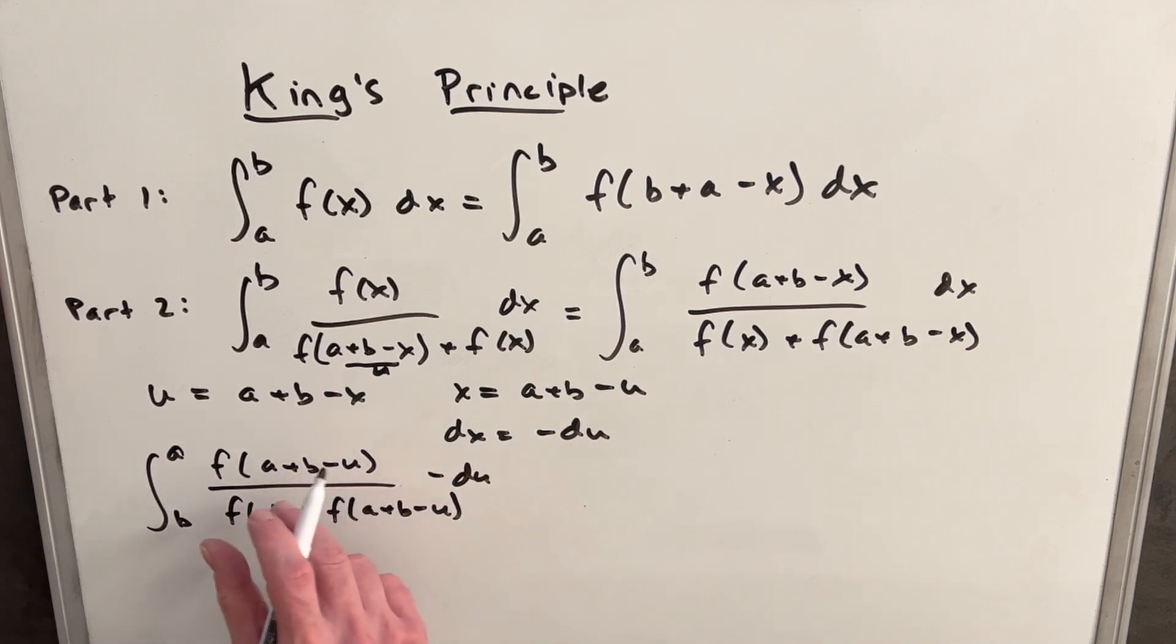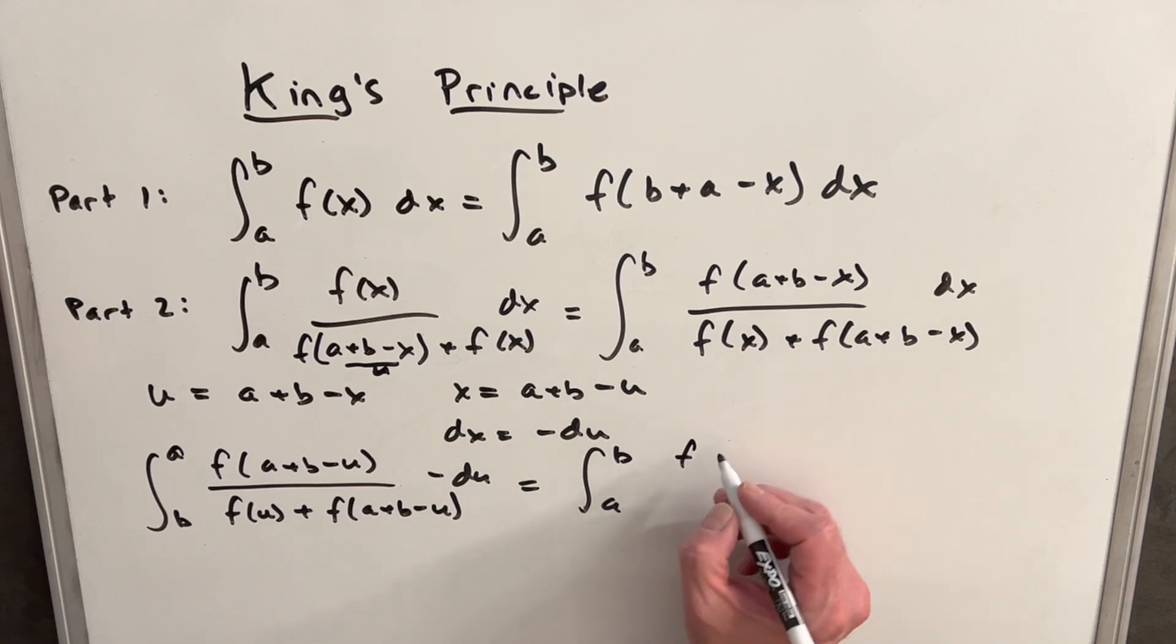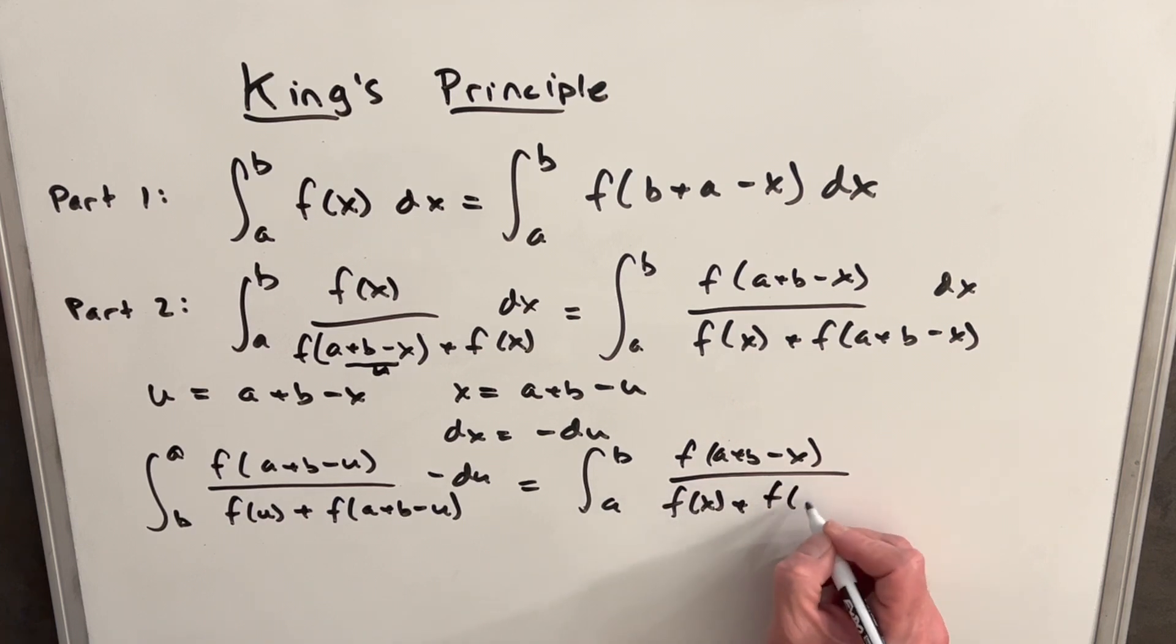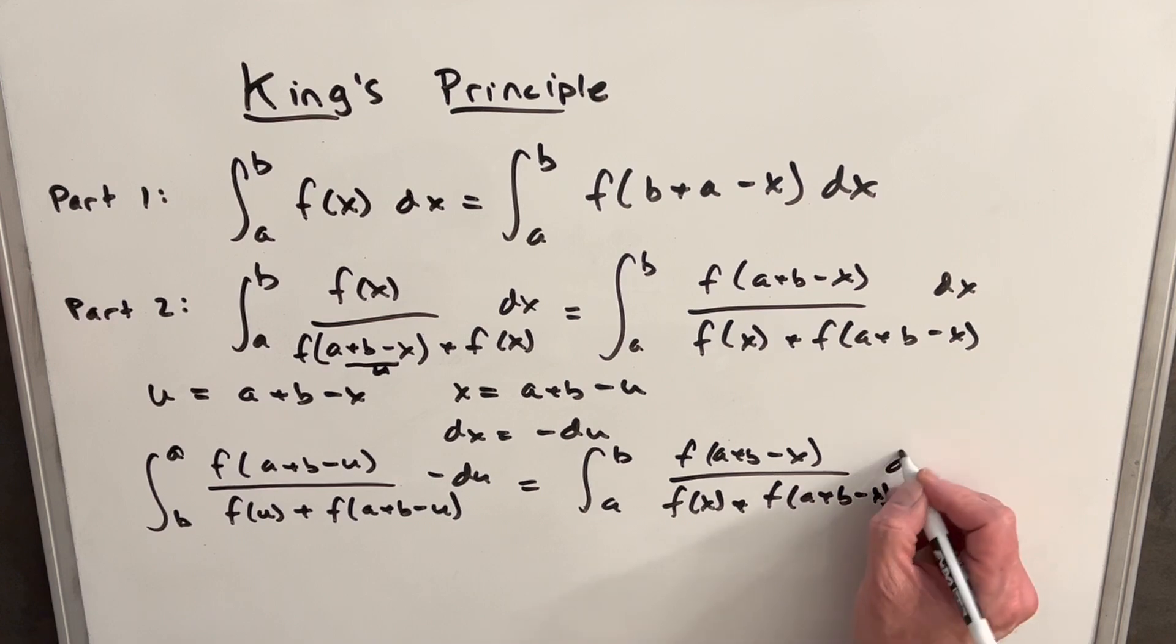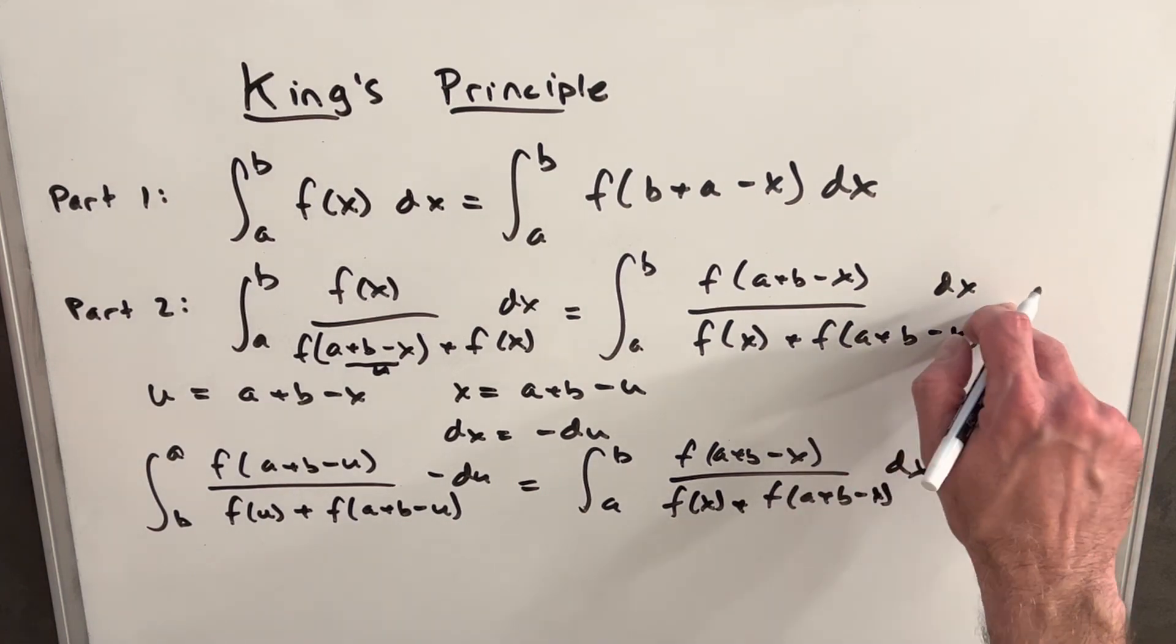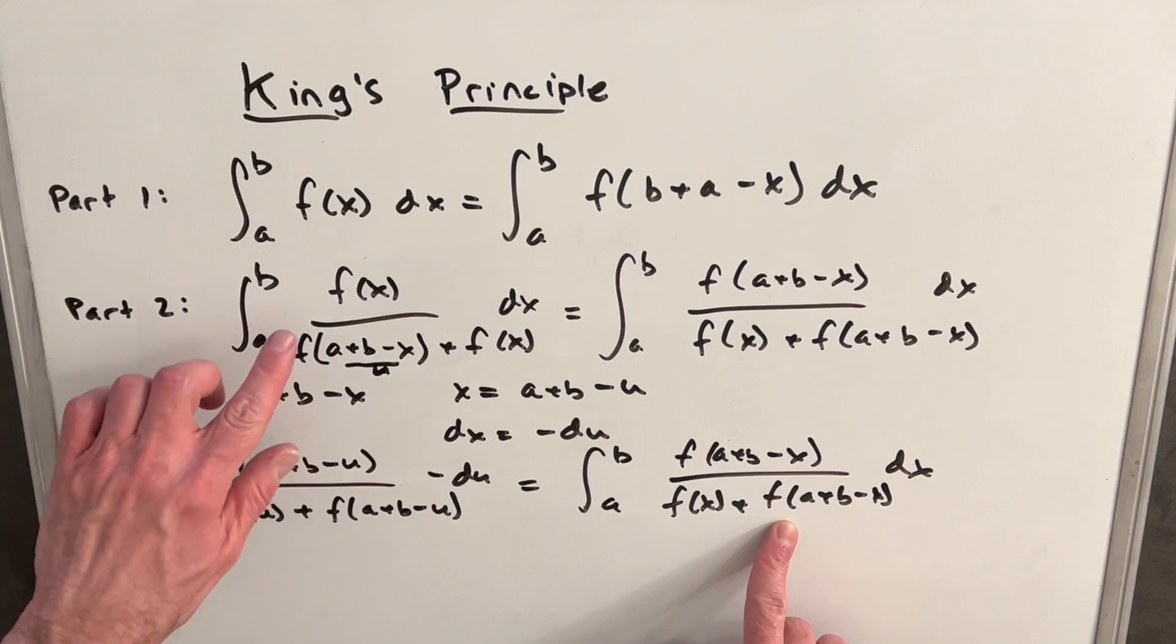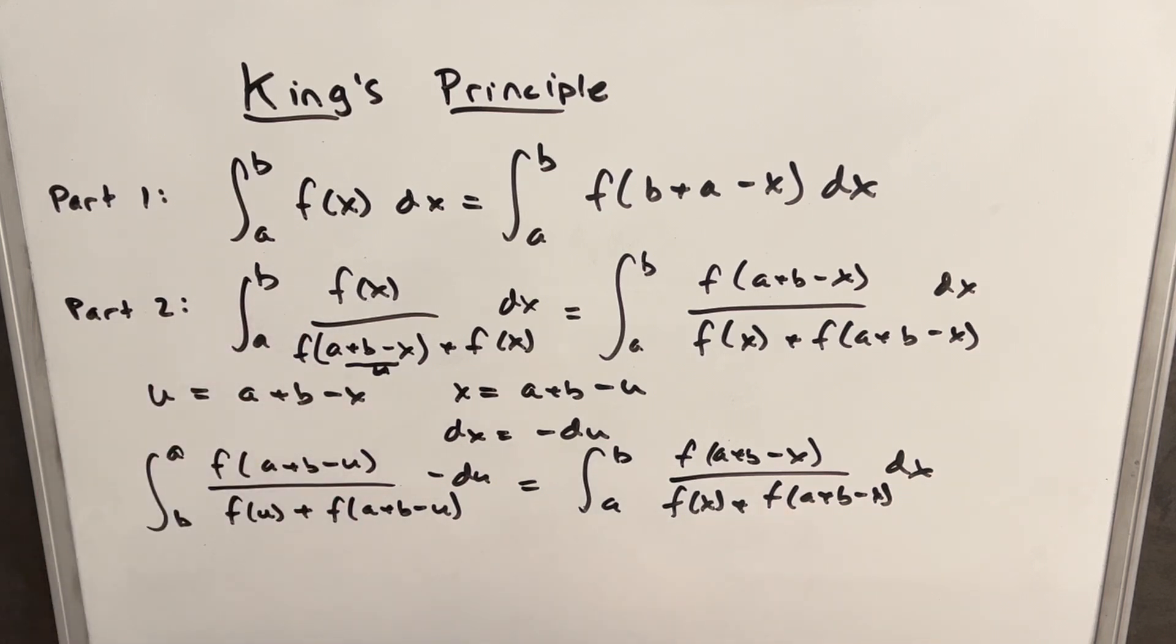We have this minus sign, so we can swap our bounds again. Okay, so we'll use that minus sign to go from b to a. But we'll do this all in one step. Our u, because it's a definite integral again, we can change our variables. So we'll change to x, and we're going to have f(a + b - x) dx over f(x) + f(a + b - x) dx, which is exactly what we have right there. So we've made this copy of the integral that's just a little different looking, and I think in the next step, we're going to see where this really pays off.